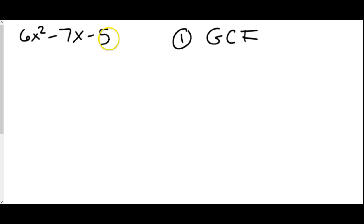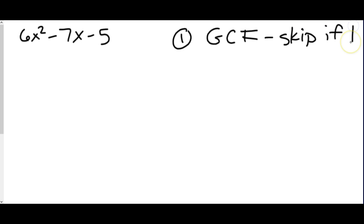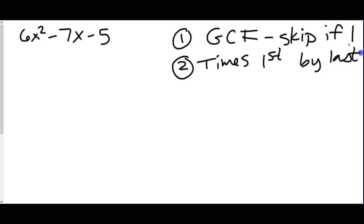You look at 7 — 7 does not divide by 5, it will divide by 1. And 6 will divide by 1. So if 1 is our greatest common factor, we skip it. Next, we have to multiply the first term by the last term. The first term is 6x², the last term is negative 5. Since there is a number in front of the x², we have to go through this longer process.